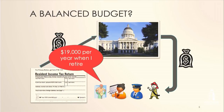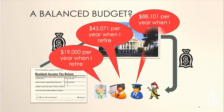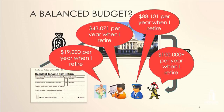What could be going wrong is if the individuals performing these services are being promised benefits they'll receive when they stop working. Consider these thought bubbles: this construction worker expects $19,000 per year in retirement; another employee expects $43,071 per year; another $88,101 per year; and another $100,000 per year. This would be in addition to any Social Security or other federal benefits — these are benefits promised by the state or local government that employs them.